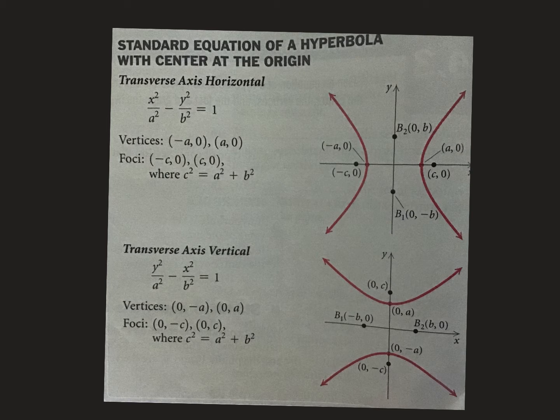The standard equation is just a bit different from an ellipse. Yesterday we had x²/a² plus y²/b². This time it's minus. There's a minus sign in the middle. Still equals one, still a fraction, still have vertices, still have foci. One other thing - the foci are found differently. It looks like Pythagorean theorem today: c² = a² + b².